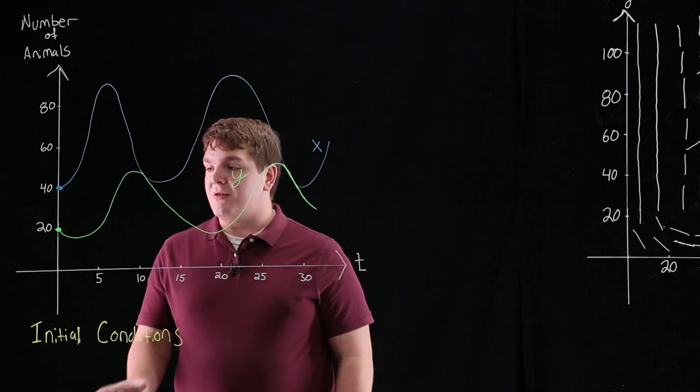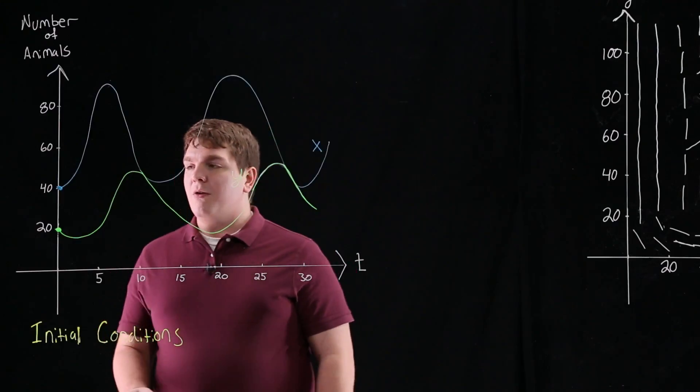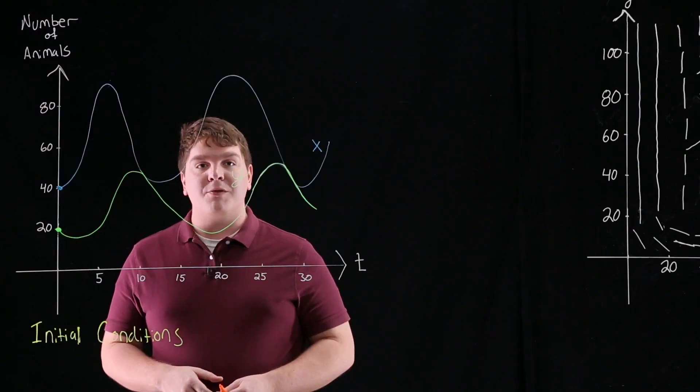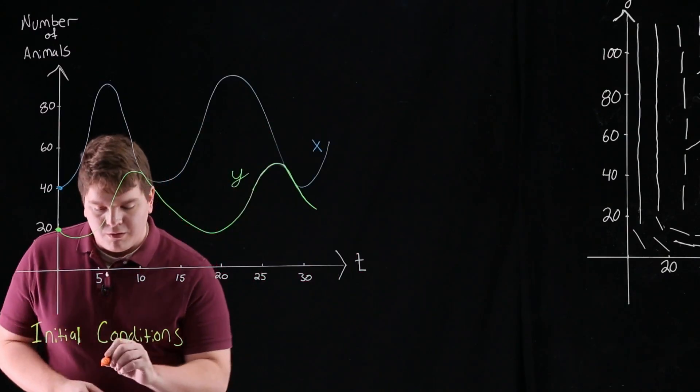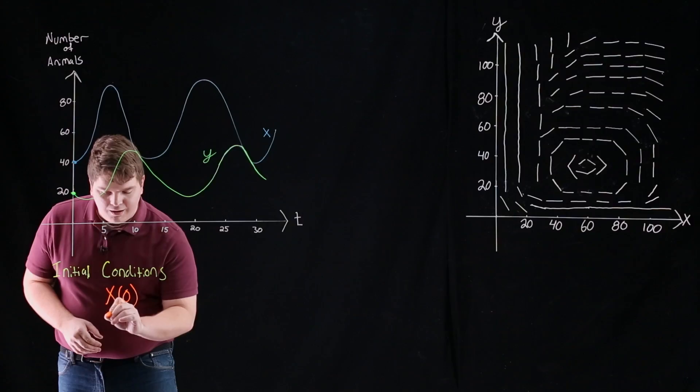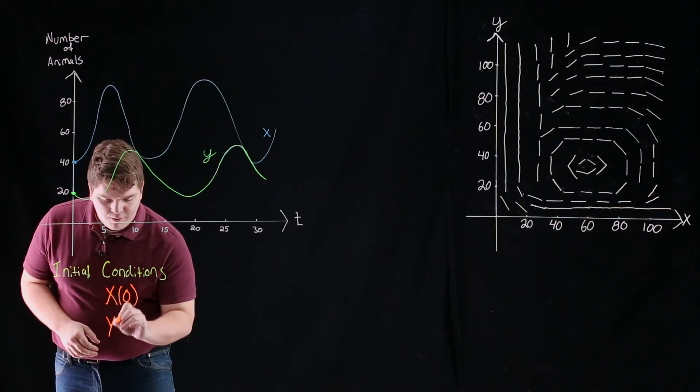So what we're looking for as far as initial conditions is we're looking for the values of x and y when time t equals 0. So what we're looking for is x as well as y.